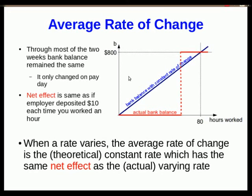But the net effect over those 80 hours is the same as if you had made a steady $10 each time you worked an hour. So this is the idea of an average rate of change. When you have a varying rate of change, the average rate is the constant rate that would have the same net effect.